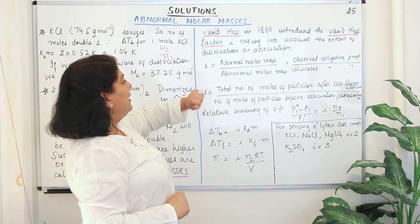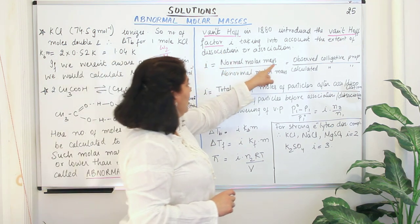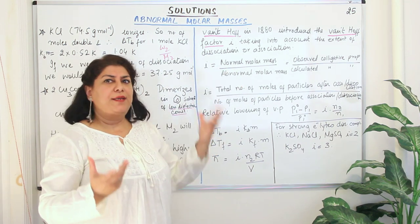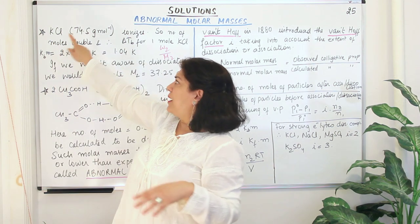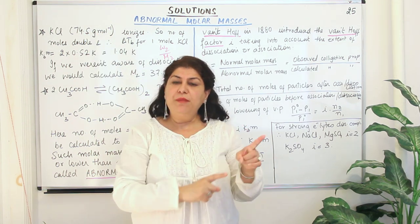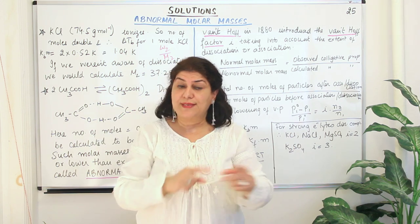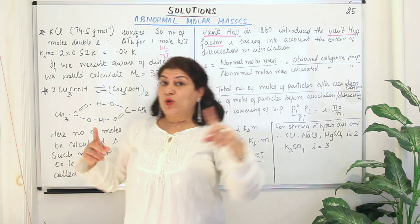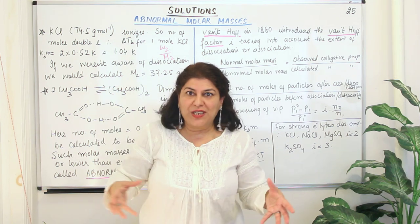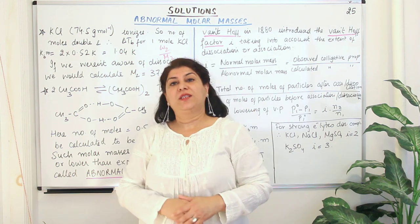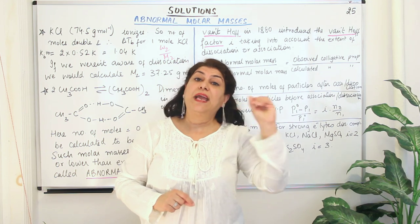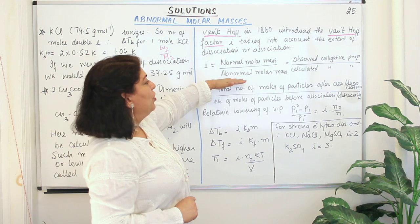So what is this factor? The Van't Hoff factor i can be defined as the ratio of normal molar mass to abnormal molar mass. The normal molar mass is the expected theoretical value — for example, in the case of KCl it was 74.5 g/mol. Divided by the abnormal molar mass — the mass you calculated experimentally when you carried out the experiment, found out the colligative property, and calculated the molar mass. That is your abnormal molar mass, or the mass with error.